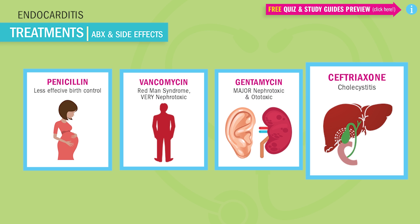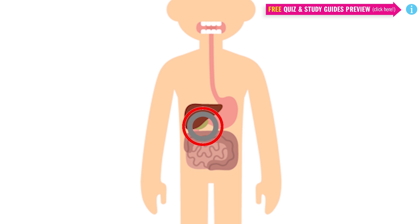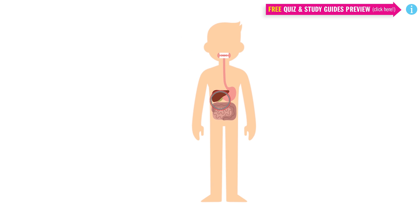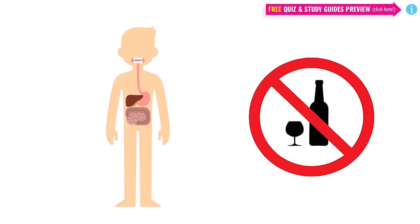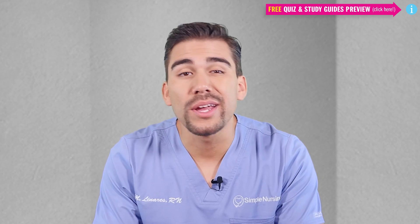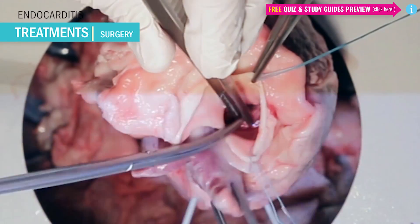Lastly, ceftriaxone — brand name Rocephin, in the class of cephalosporin antibiotics — causes inflammation in the gallbladder, called cholecystitis. Patients commonly complain of radiating shoulder pain, which is notable since the gallbladder is near the liver in the upper right of the abdomen. A big patient teaching point: no alcohol, no ETOH with ceftriaxone, since it affects organs near the liver. If the infection or inflammation has destroyed too much of a heart valve, we can always do surgery to repair or replace the valve.